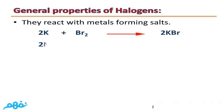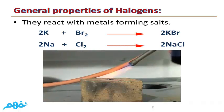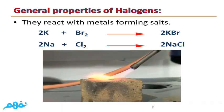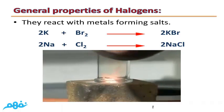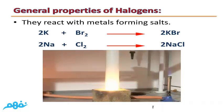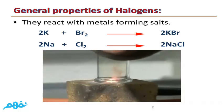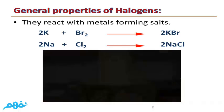Halogens react with metals forming salts. For example, the reaction of Potassium with Bromine forms Potassium Bromide, and the reaction of Sodium with Chlorine forms Sodium Chloride.